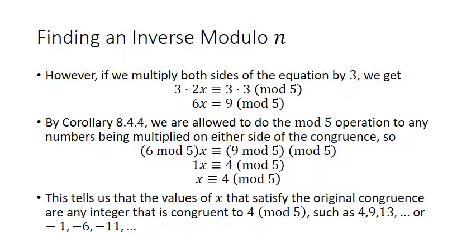Here's something that will unexpectedly help. If you were solving 2x equals 3 with real numbers, multiplying by 3 wouldn't help you at all. But in this situation, multiplying by 3 is exactly what you want to do. When you multiply both sides by 3, you get 6x congruent to 9 modulo 5. Then you can do the mod 5 operation to it: replace the 6 with 6 mod 5, which is 1. And 9 mod 5 is 4. So you get 1 times x, meaning the solutions are x congruent to 4 mod 5.